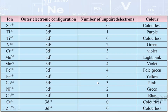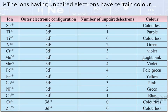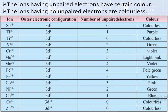From this chart, we can say that ions which do not have unpaired electrons — such as Sc³⁺, Ti⁴⁺, Cu⁺, and Zn²⁺ — are colorless. Ions that are colored are those which have unpaired electrons in the d-orbital. So all ions with unpaired electrons are colored, and ions with no unpaired electrons are colorless.